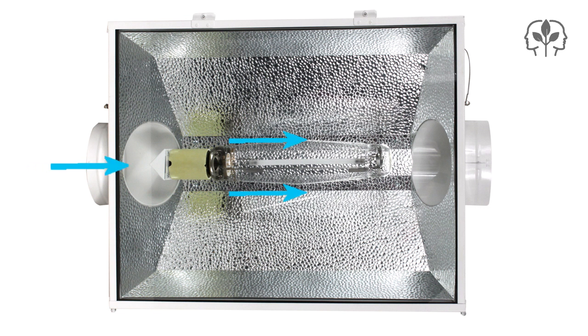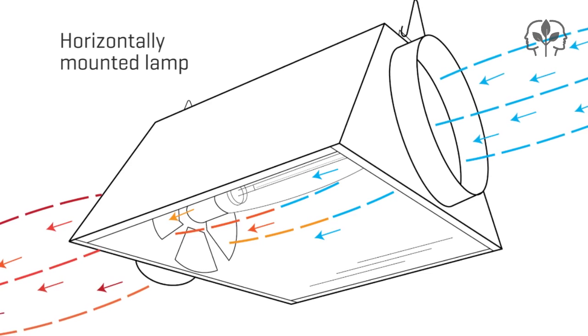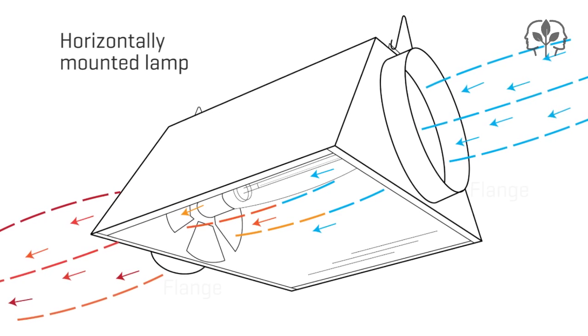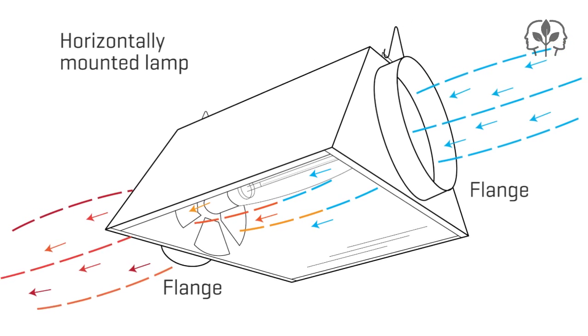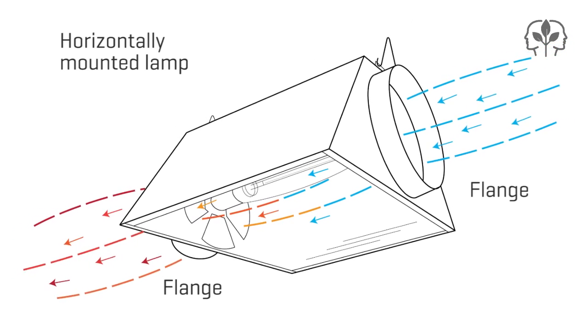Air-cooled reflectors work by allowing cool air to be passed across the lamp during operation. The most common designs feature a horizontally-mounted lamp with flanges on either side to allow cool air to be ducted in and warm air ducted out.